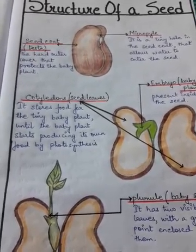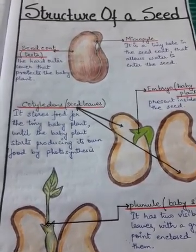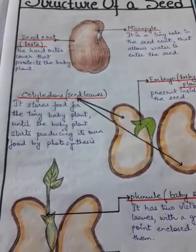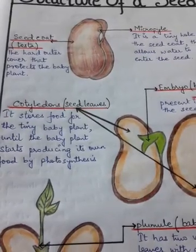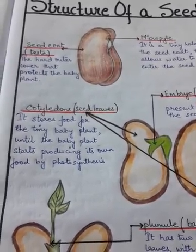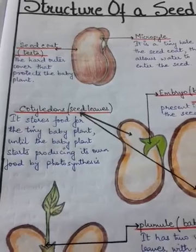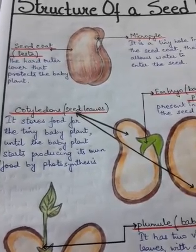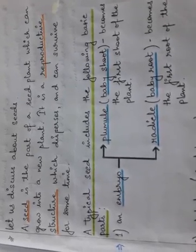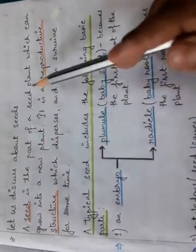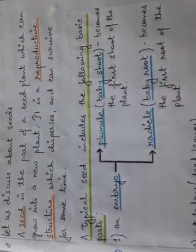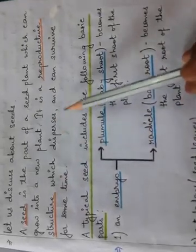Good morning students, we are back with our science class. Today we are going to discuss the structure of a seed. Flowers produce seeds by reproduction, and seeds are very important as they grow to produce a new plant. A seed is the part of a seed plant which can grow into a new plant — it is a reproductive structure which disperses and can survive for some time.